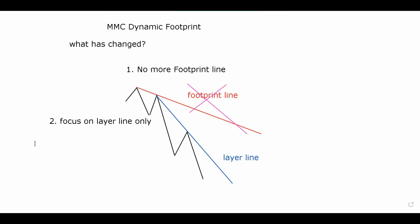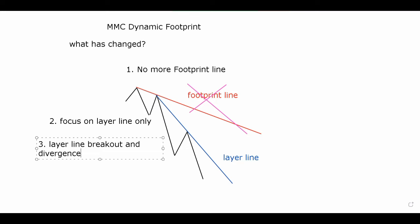Number two: we focus on the layer line only. When you approach the market now, you're going to look for a layer line first - not a footprint line but a layer line. We adjust to this new dynamic approach. Third: we look for a layer line breakout. We wait for the layer line to break out. I'm going to give you a tip if you watch till the end - how to make your entries and make sure the market is going in that direction. There's a hint signal that comes out.